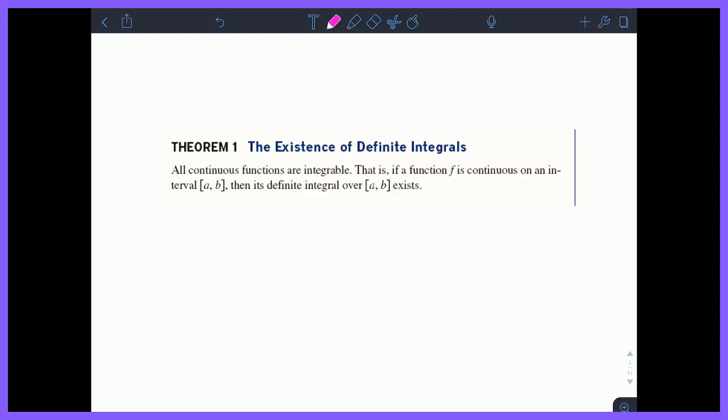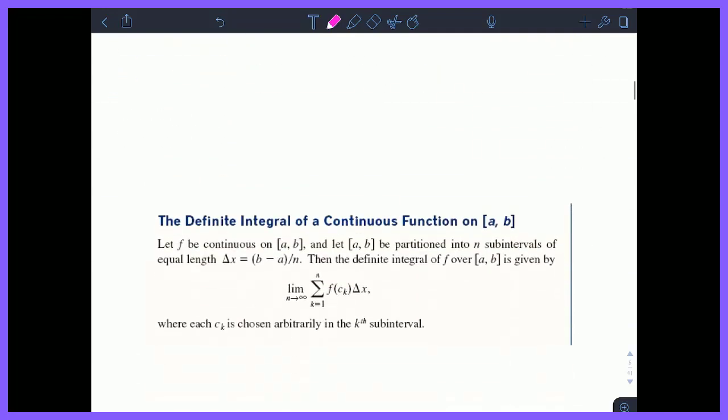But first a brief theorem, very important theorem, super big. Theorem number one of this section states, all continuous functions are integrable. That makes sense, right? Because we know if a derivative is continuous, right, if a function is differentiable, then we know the original is continuous. So this means if we start with a function that's continuous, that means we can go backwards and integrate it. Right? Basically, this just is a fancy way of saying, differentiability implies continuity. It's just we're using different terminology.